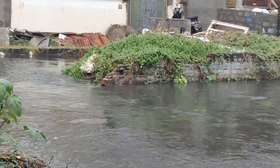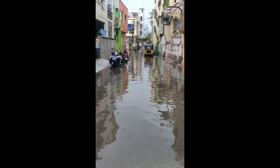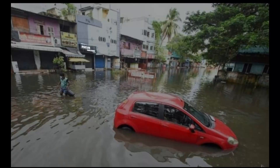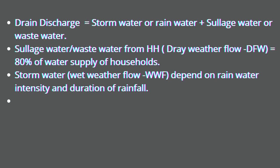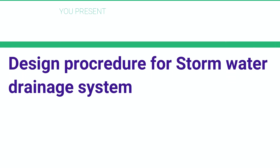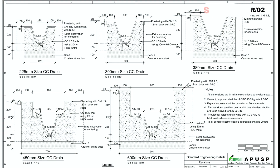The problems of heavy rainfall in urban areas can be overcome by proper drainage. Stormwater drainage discharge inputs include stormwater and wastewater — that is, waste water from households — which is considered to be 80 percent of the water supply to the households.